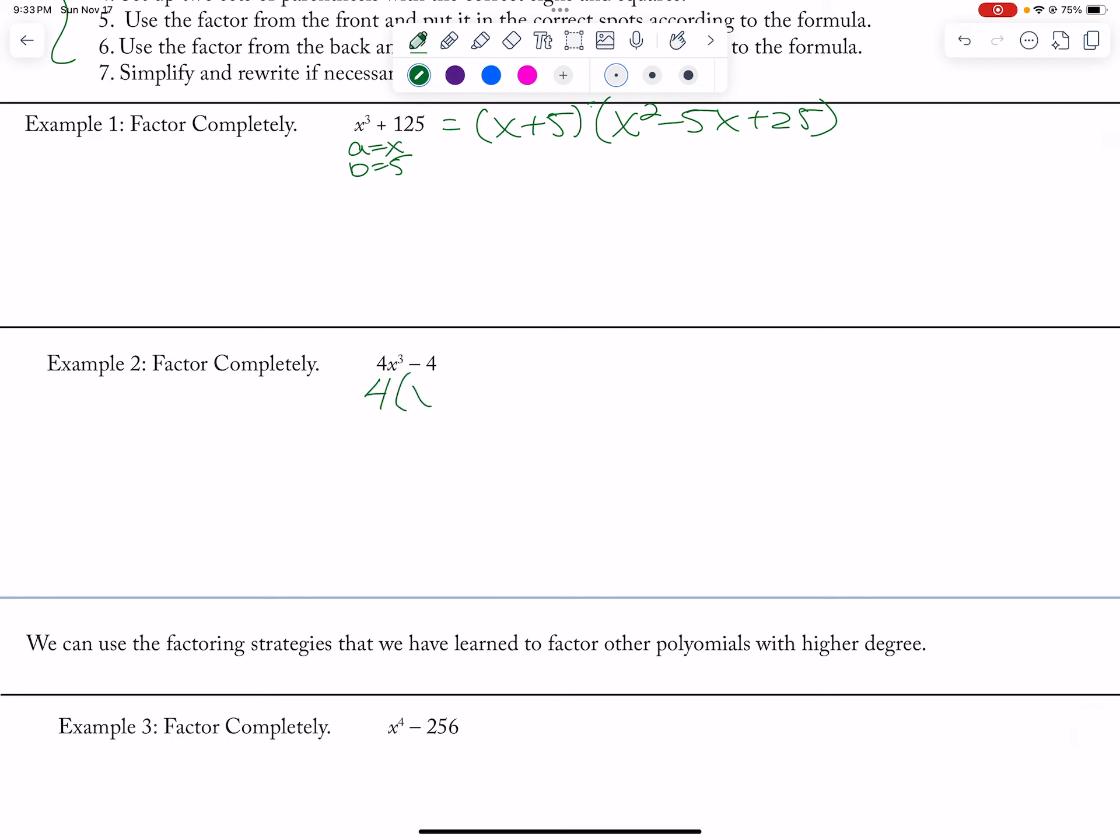So I'm going to factor out a 4 first because I'm going to factor out my greatest common factors. So then my A is equal to X and my B is equal to 1. So this factors to 4X minus 1, X squared plus X plus 1.